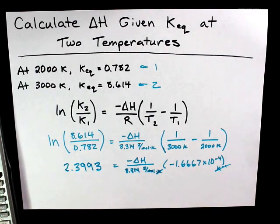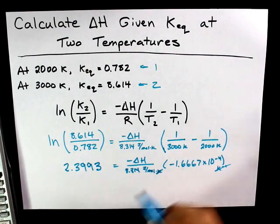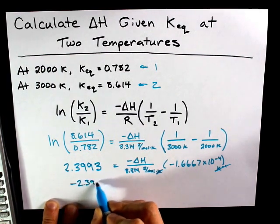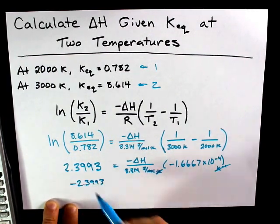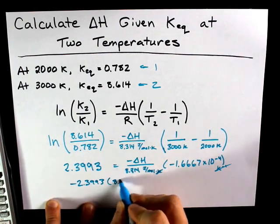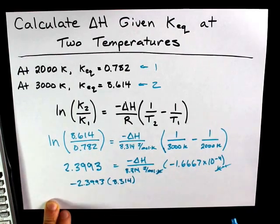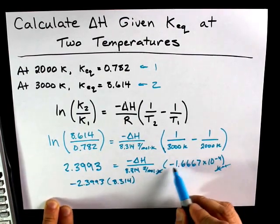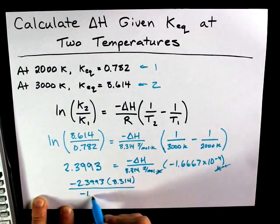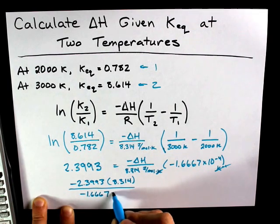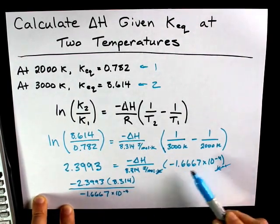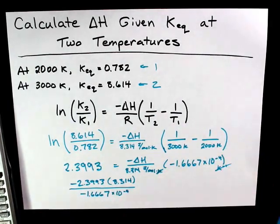So, how to isolate for delta H? Well, I'm going to move the negative over to make it negative 2.3993. I have to undo division by 8.314. So, I multiply by 8.314. And I have to undo multiplication by this number. So, I will divide by that number. 1.6667 times 10 to the negative 4. Note that we lost the unit off of this. It is currently unitless, only because I cancelled it now. This is unitless because whatever units K comes with, which we usually assume is nothing, cancel out when you do the ratio.